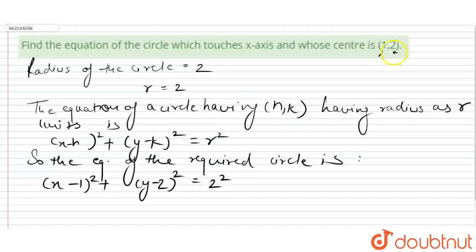Then we will have to solve it. x square minus 2x plus 1 plus y square. When we will open this equation then we will get y square minus 4y plus 4 is equals to 4. 2 whole square is equals to 4.